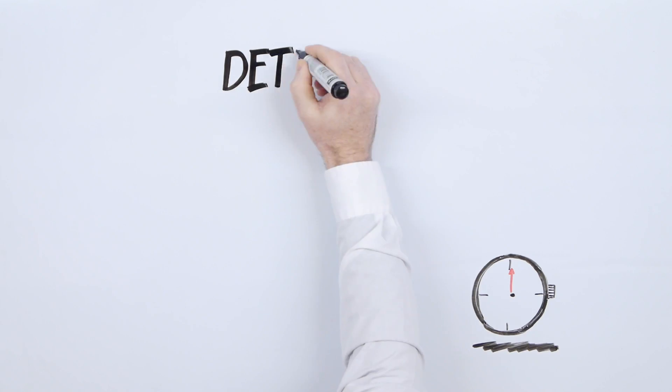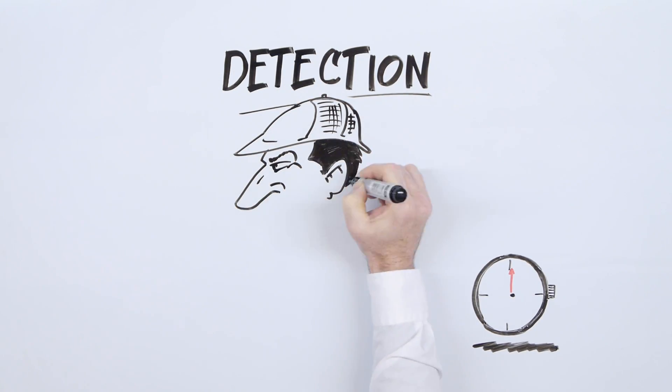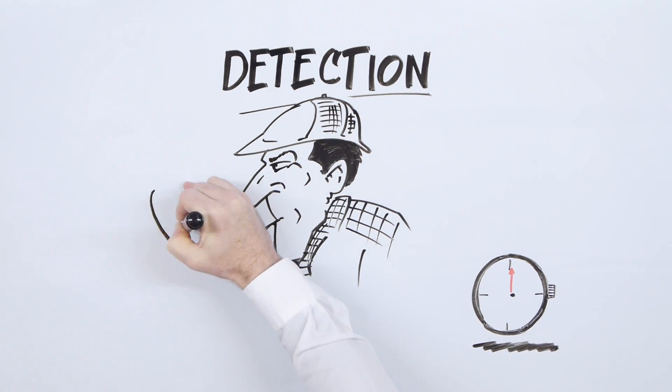There are five stages to effective threat management. The first stage is detection. Timely detection of a DDoS attack is critical to minimize its impact.